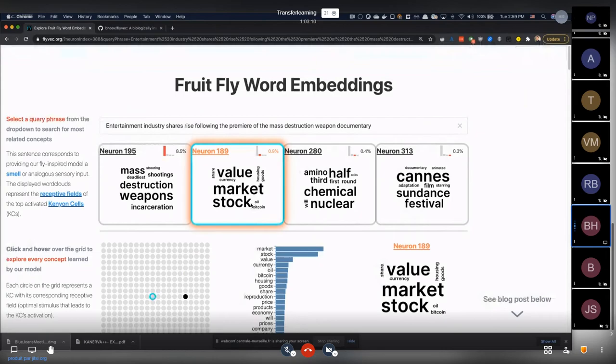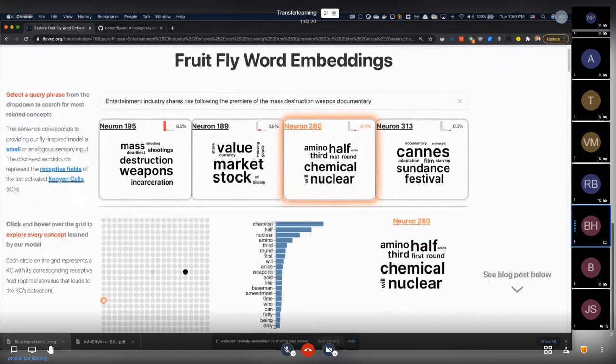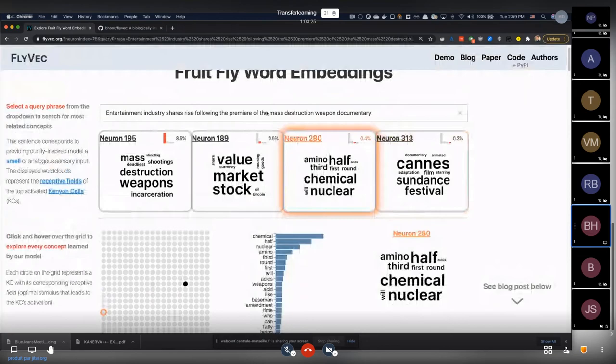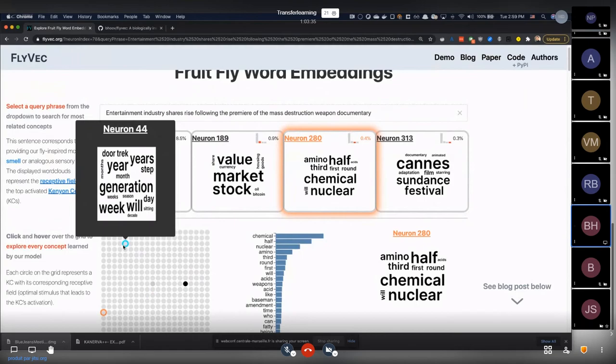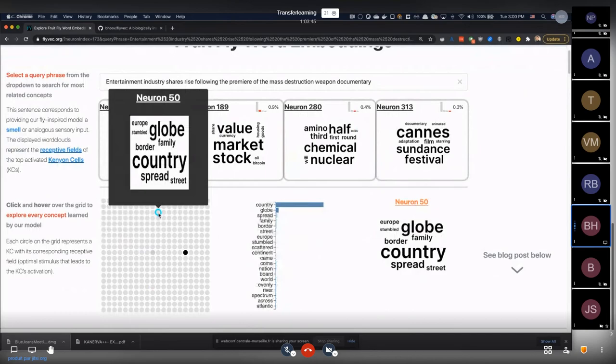You have the stock market, value and currency, housing, oil, Bitcoin. All these valuable things associated with the stock market. We have biological and a chemical neuron. Chemistry, half nuclear, amino acids, weapons. It's learning the concepts that kind of belong to this input. And so what we've done is we've essentially learned weights where every single synapse, which is represented by a row of the original weight matrix, where every single synapse has learned its own concept from the corpus we fed it.